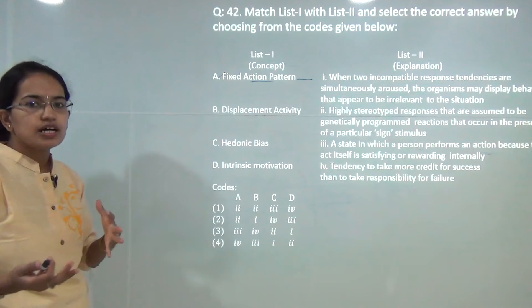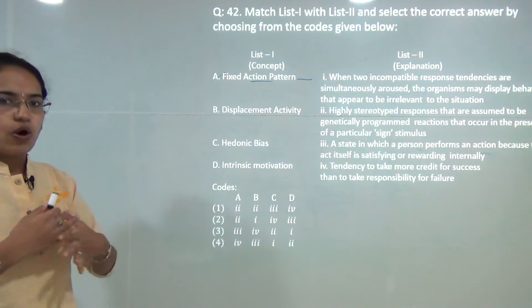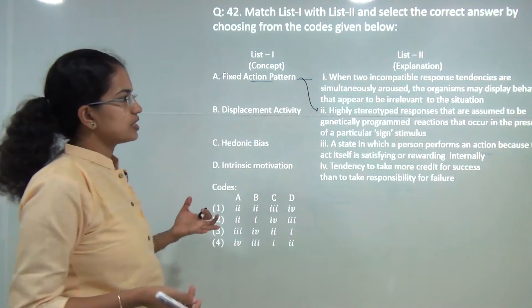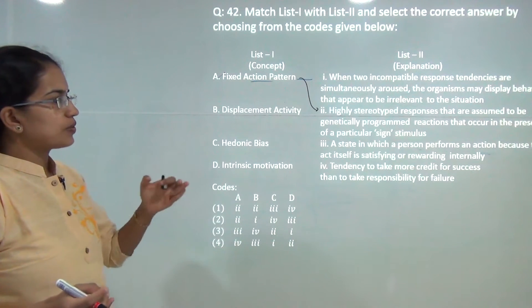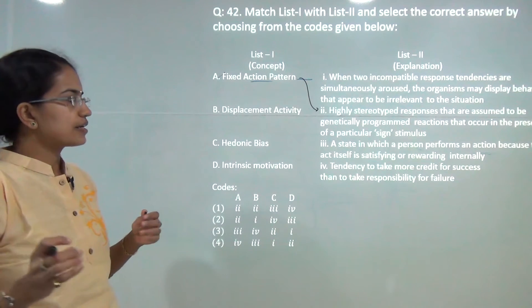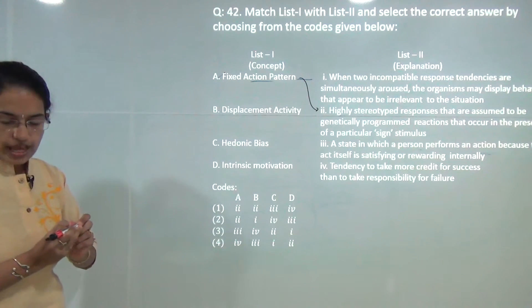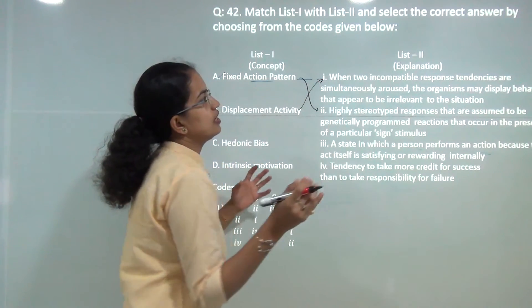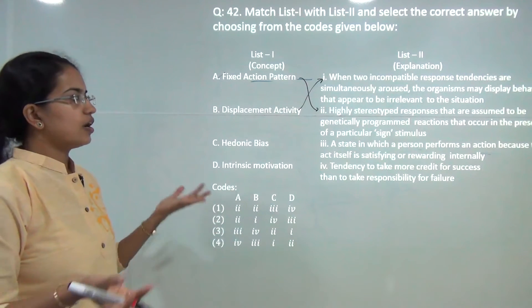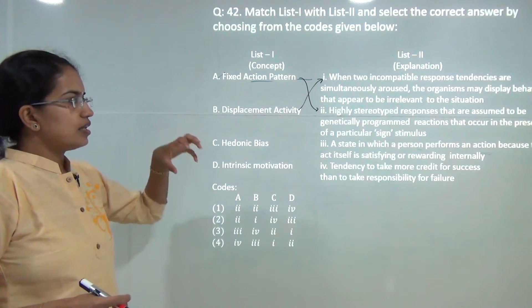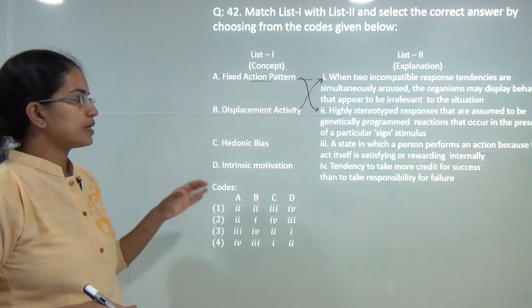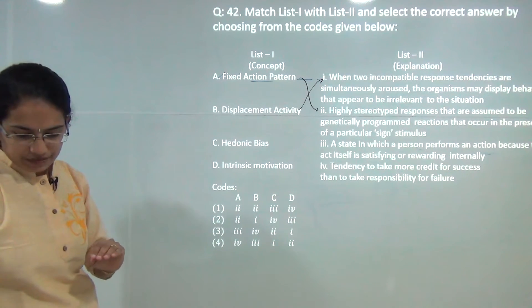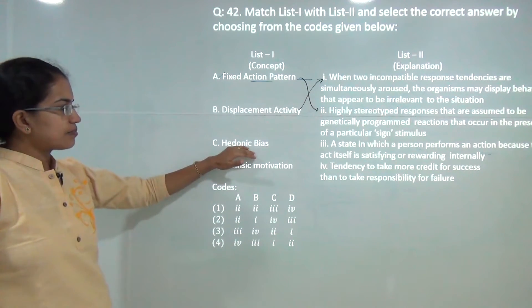You have to match the correct concept with the definition. There were many questions on definitions this time. Fixed action pattern is a stereotyped response that assumes genetically programmed reactions that occur in the presence of a particular signal stimuli. Displacement activity: when two incompatible responses are around together or at the same time, then individual may display behavior that appears irrelevant in certain situations.